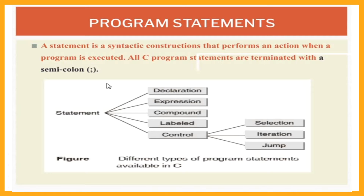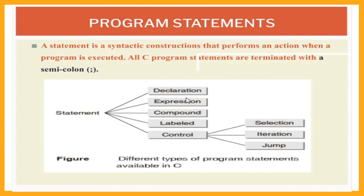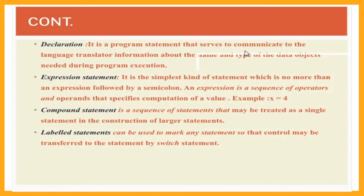For example, int a, int a, b — int a is a variable; we can declare a variable this way. A declaration statement is a program statement that serves to communicate to the language translator information about the name and type of the data objects needed during program execution. The name is the variable name, and the type is the data type — char for character data, integer, floating point — and you declare it.